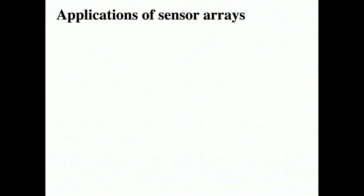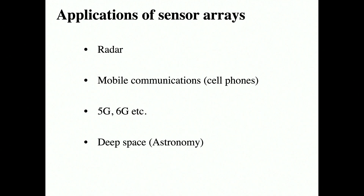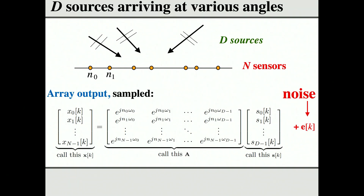These sensor arrays are everywhere today — in cell phones and many devices at home. The collected signals can always be written in matrix equation form. The quantity omega_i determines the directions of arrival. Theta_i is technically the direction of arrival, transformed into omega_i. From all the received signals on the left, you have to find what those theta_i's are — this is the famous direction of arrival estimation problem. In those days, there were only two very famous algorithms: MUSIC and ESPRIT.